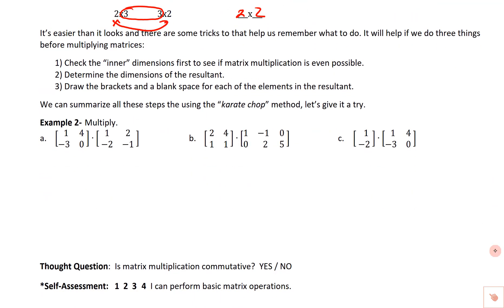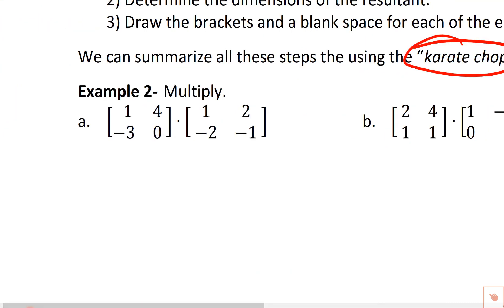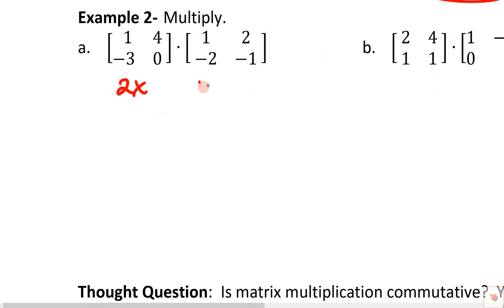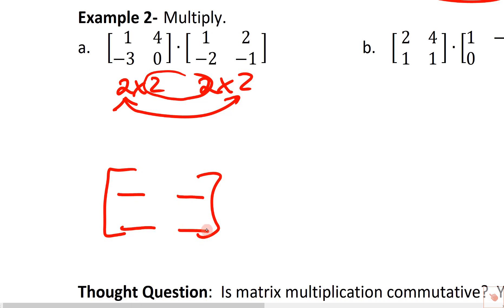Here's the karate chop method. First, check inner dimensions to confirm we can multiply. Determine dimensions of the resultant and draw blank spaces for rows and columns. For a two-by-two times two-by-two, inner dimensions match, resultant is two-by-two with four blanks. For the first row, first column entry: take the first row and karate chop it with the first column, matching corresponding elements.